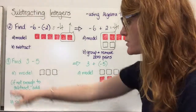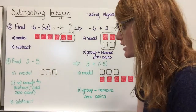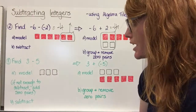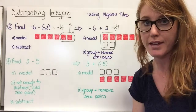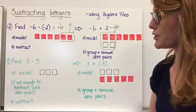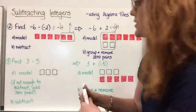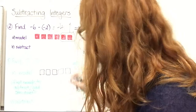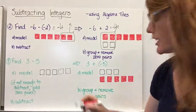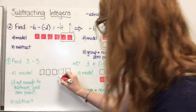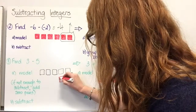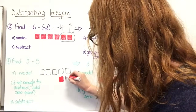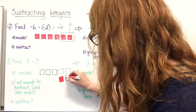Find three subtract five. First we model — we have three positive tiles. In this case, there's not enough to subtract, so we add zero pairs. We can't take five away because we've only got three to start. So we add a couple of zero pairs. When we add zero pairs to a number, we are not changing its value — if we add two positives, we also include two negatives, and they cancel each other out.